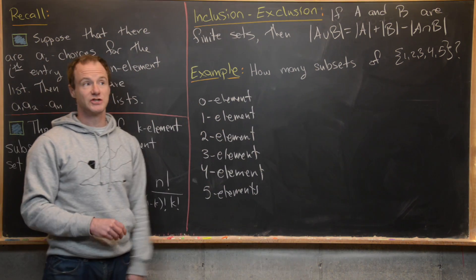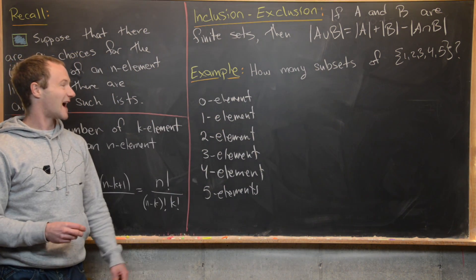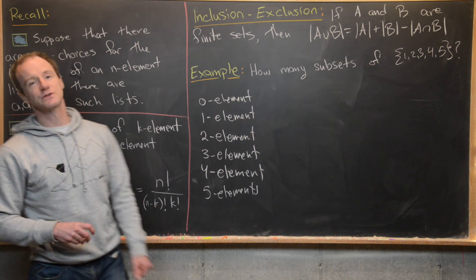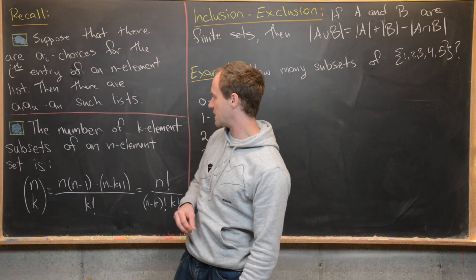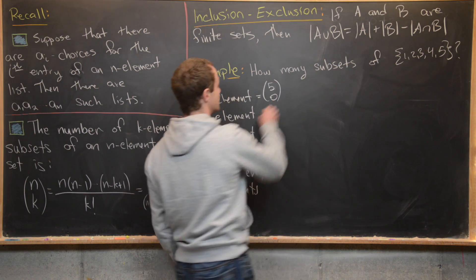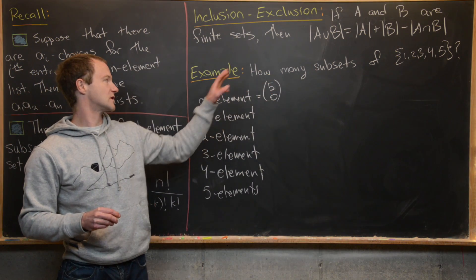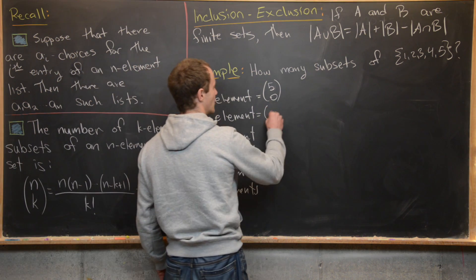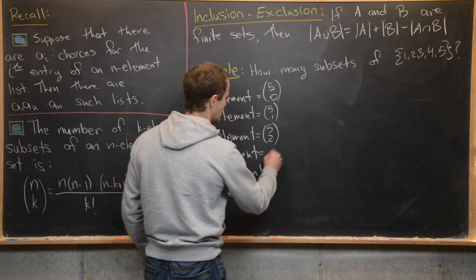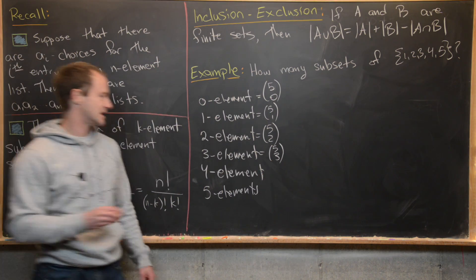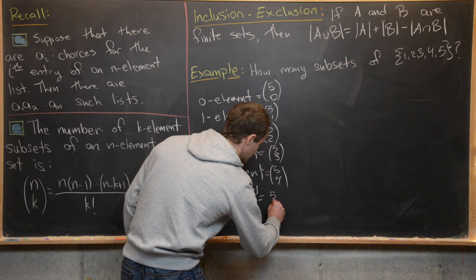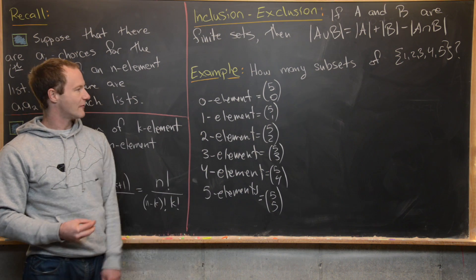There will be zero-element subsets, one-element subsets, two, three, four, and five-element subsets. The zero-element subset is just the empty set. Using the rule that the number of k-element subsets of an n-element set is n choose k, the counts are: 5 choose 0, 5 choose 1, 5 choose 2, 5 choose 3, 5 choose 4, and 5 choose 5.